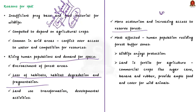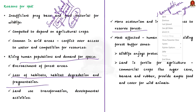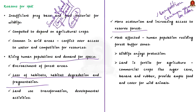People residing in forest buffer zones are the most affected because they share a common geographical border with wildlife. In buffer zones, wildlife enjoys protection and the land is often fertile, leading to intensive agricultural practices. For example, growing commercial crops like sugarcane, banana, and rubber lures animals into agricultural areas, providing them ample food as well as cover.